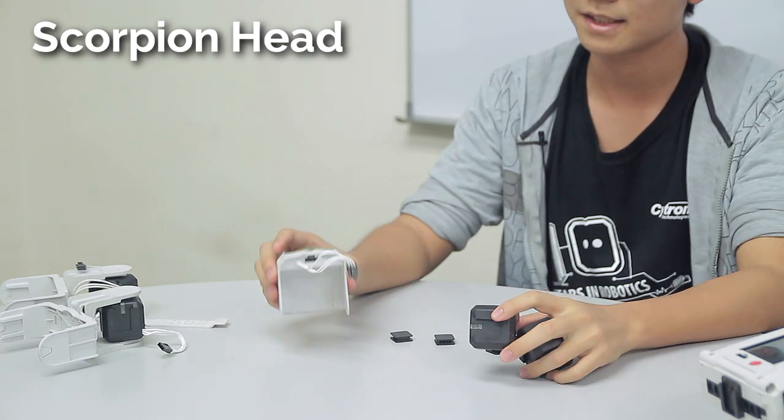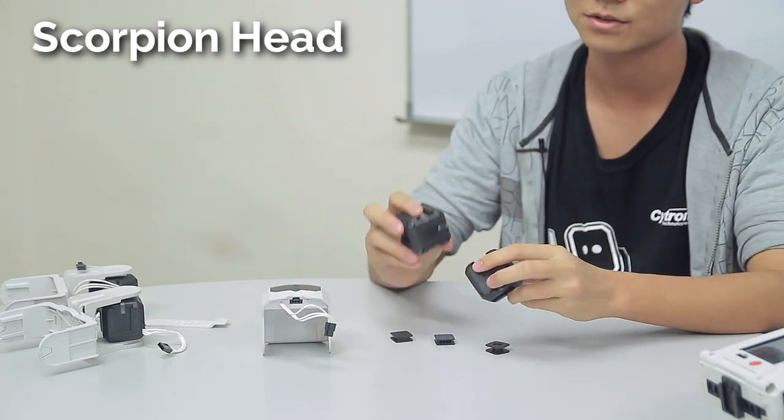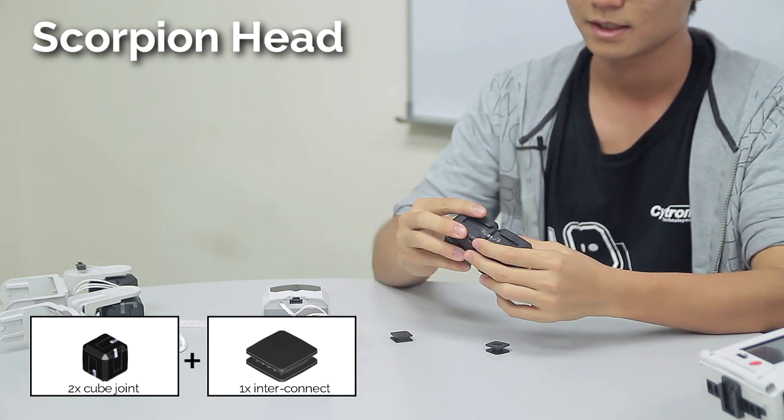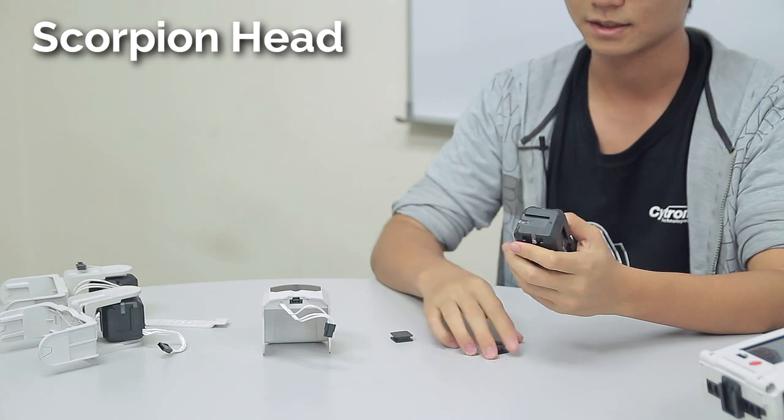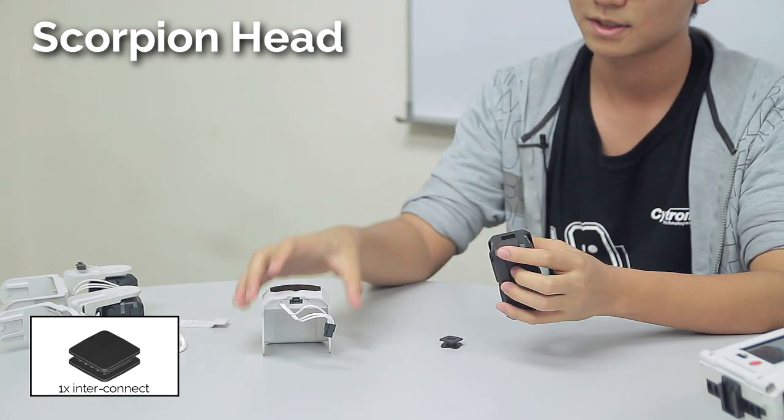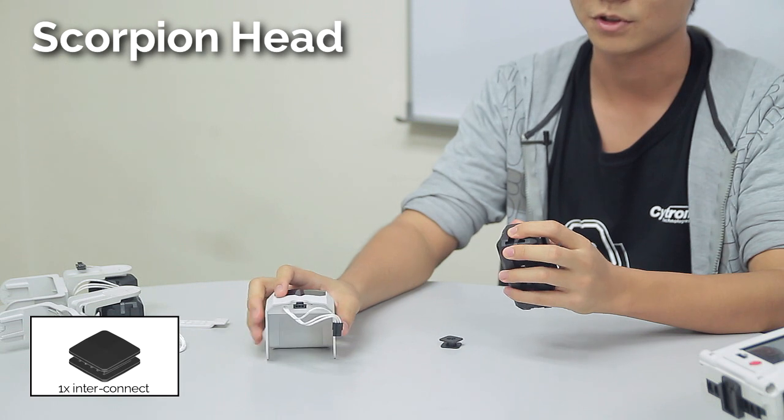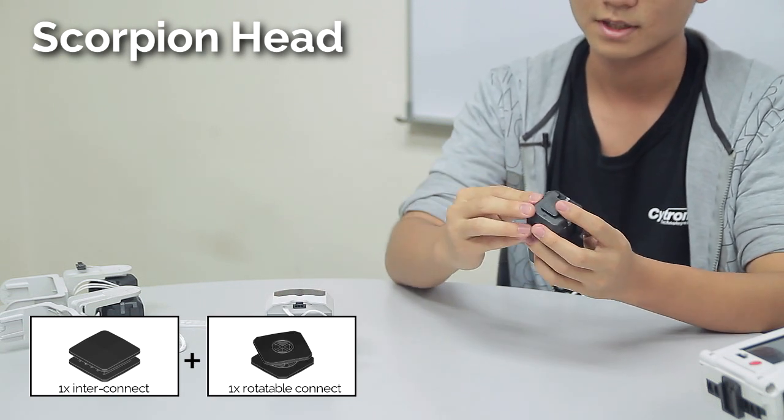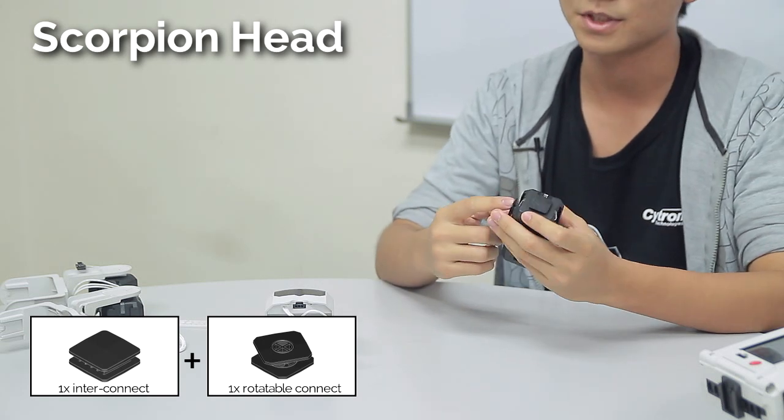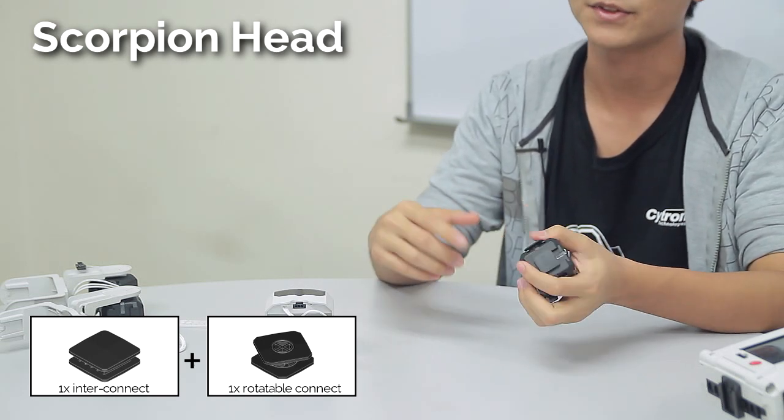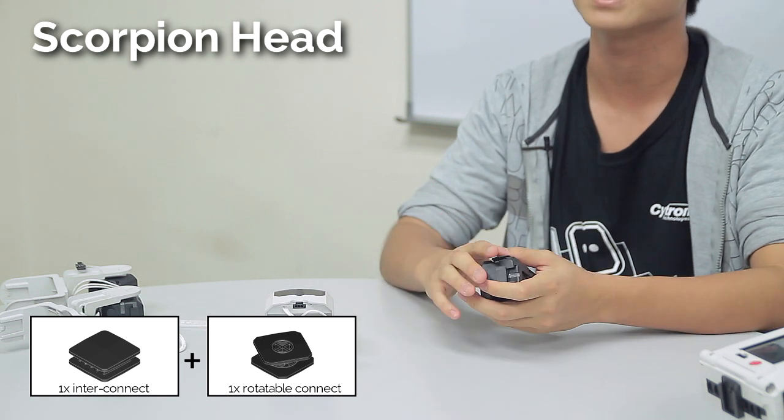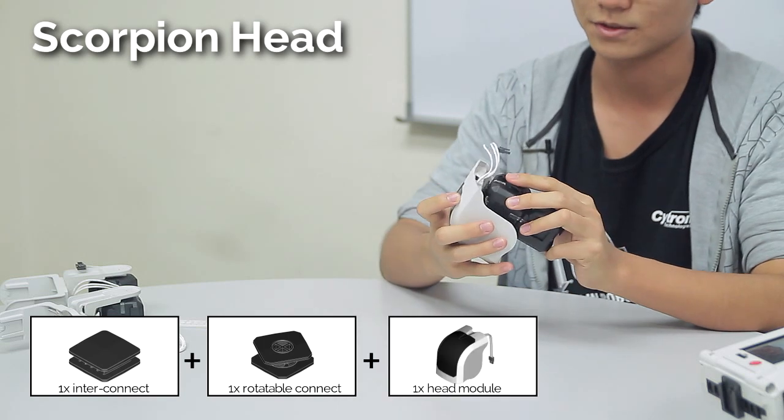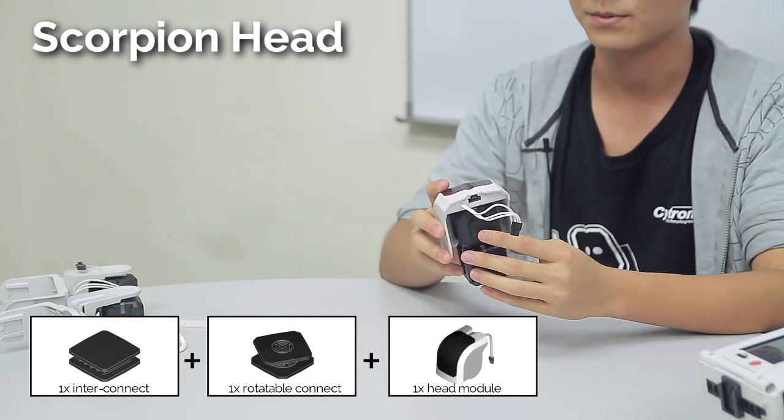Now we are going to build the head. For the head, we actually need to use two cube joints. Connect them together with an interconnect first. Now on one of the cube joints, slide in an interconnect at the top. This is for the head module. But before that, remember to slide in a rotatable connect here. This is supposed to go to the body. We are using a rotatable connect here so you can conserve your interconnects, but of course, if you want to have a more solid head, you can use an interconnect also. Now slide in the head module, and we are done.